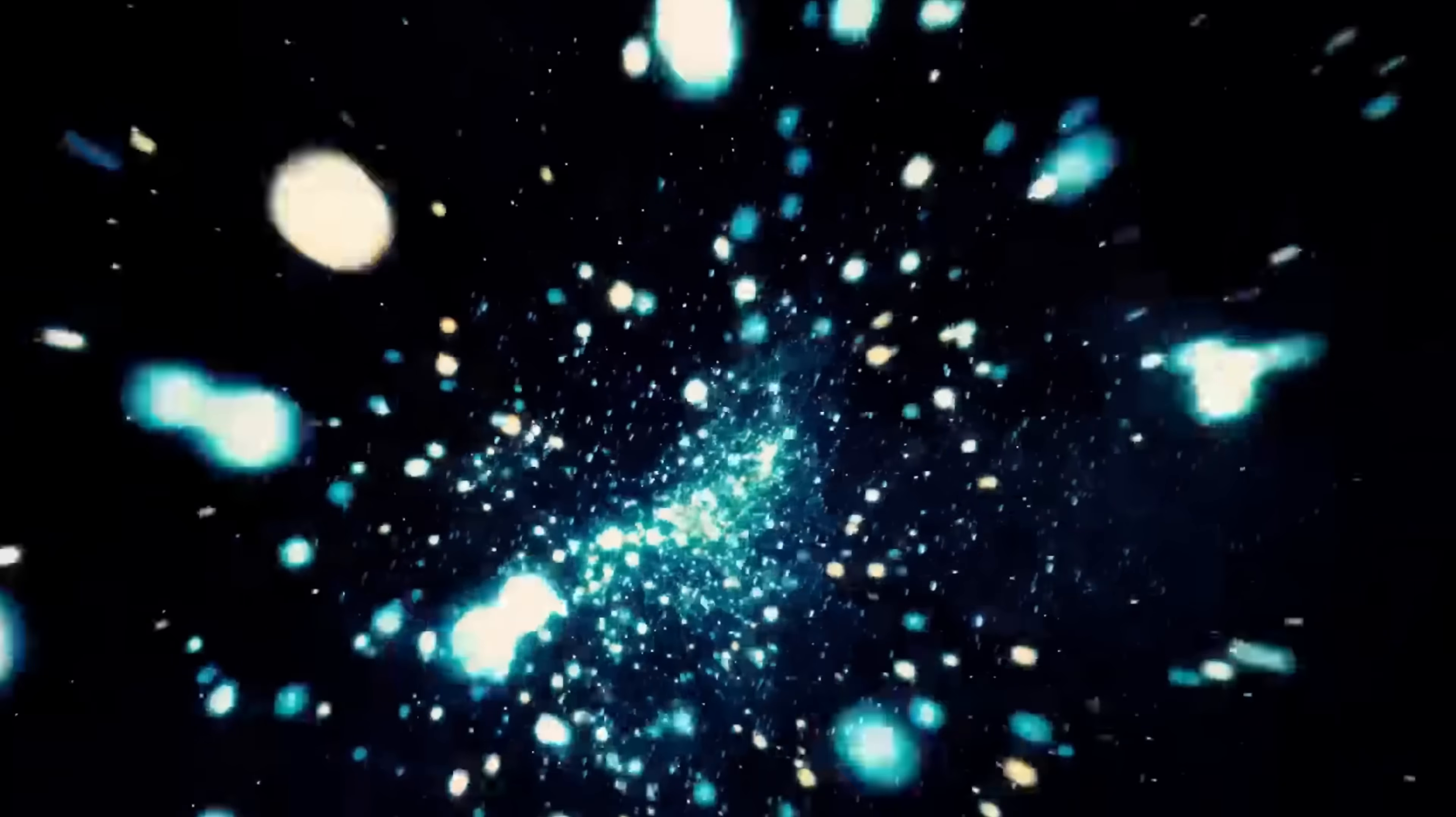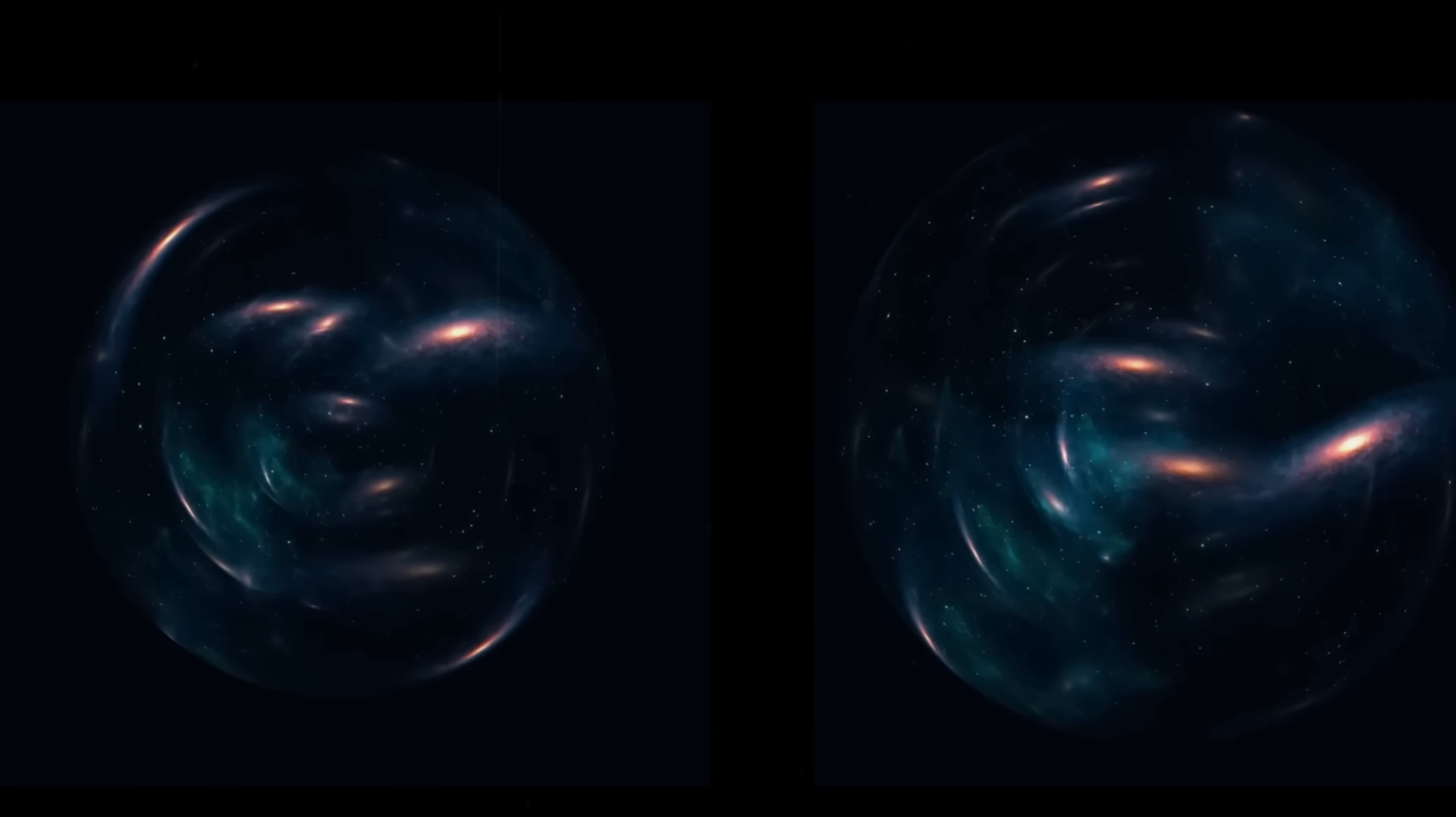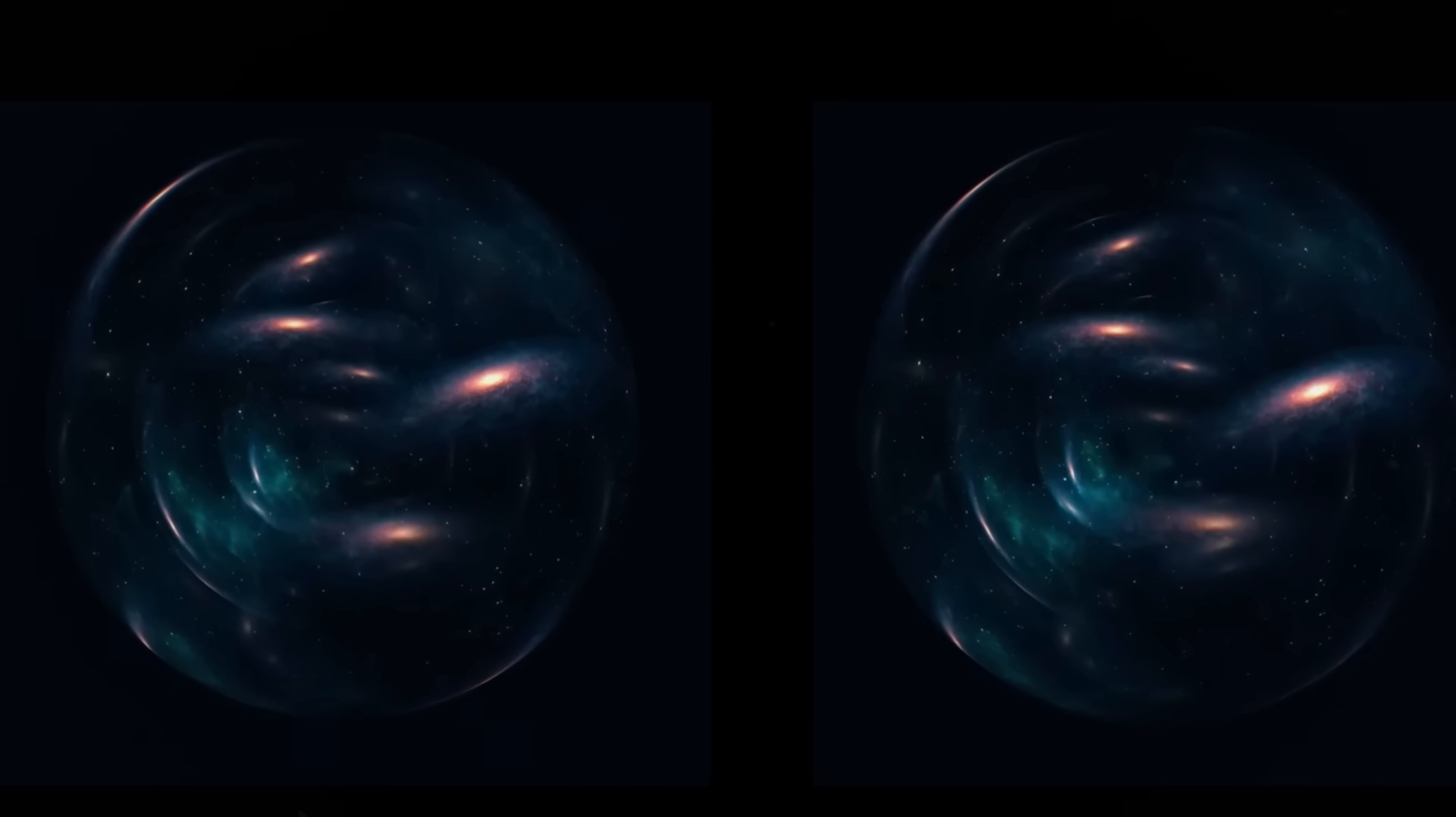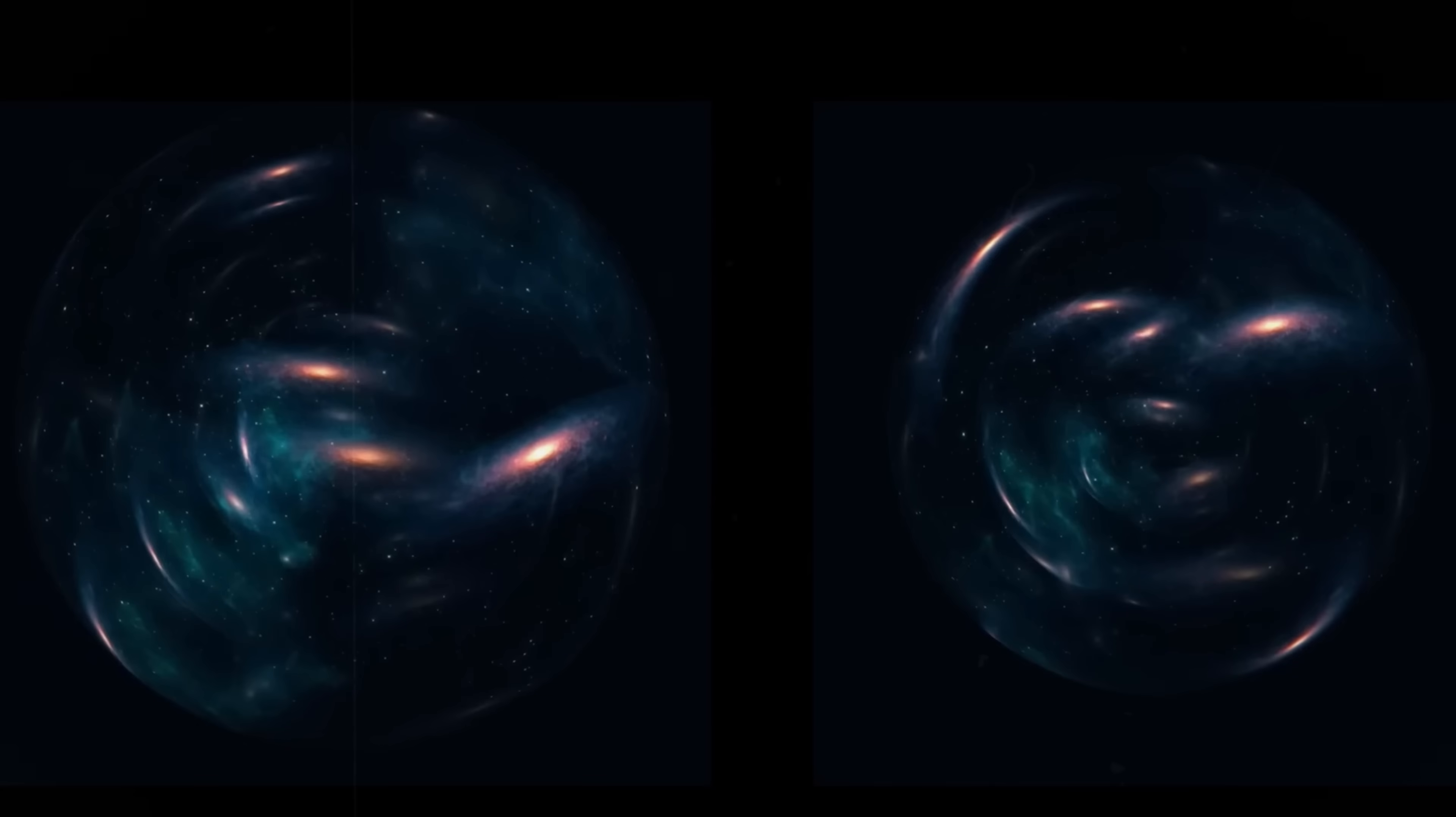However, our observable universe seems to violate CPT symmetry because particles outnumber antiparticles, and time only moves forward. This is where the mirror universe theory comes into play. It suggests that on the other side of the Big Bang, a twin universe exists where time moves in reverse and antimatter dominates, instead of regular matter. From our perspective, this reversed cosmos would look as though time is rewinding, but for an observer within it, everything would feel completely normal.